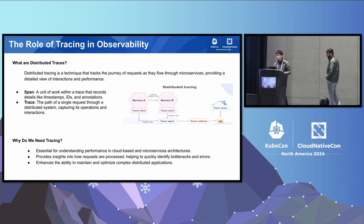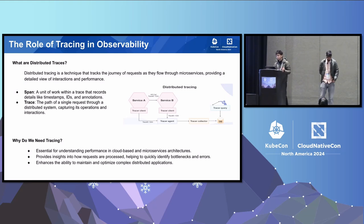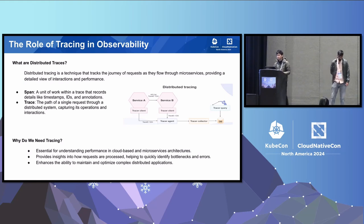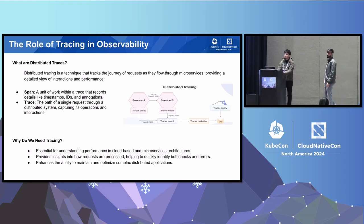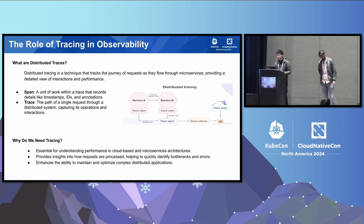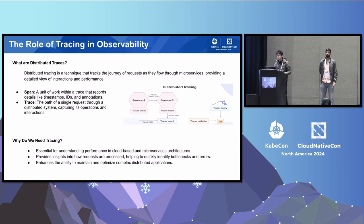For this talk, we'll be mainly focusing on distributed tracing, which is one of the important pillars of the observability stack. Distributed tracing is a method of tracking application requests when those requests span over multiple services and across multiple servers. This is a crucial tool in troubleshooting requests when there's high latency or a fault in one of the components. A trace is the path of execution of a single request through the entire distributed system, and a span is a unit of work within a trace that records details like timestamps, IDs, and annotations.